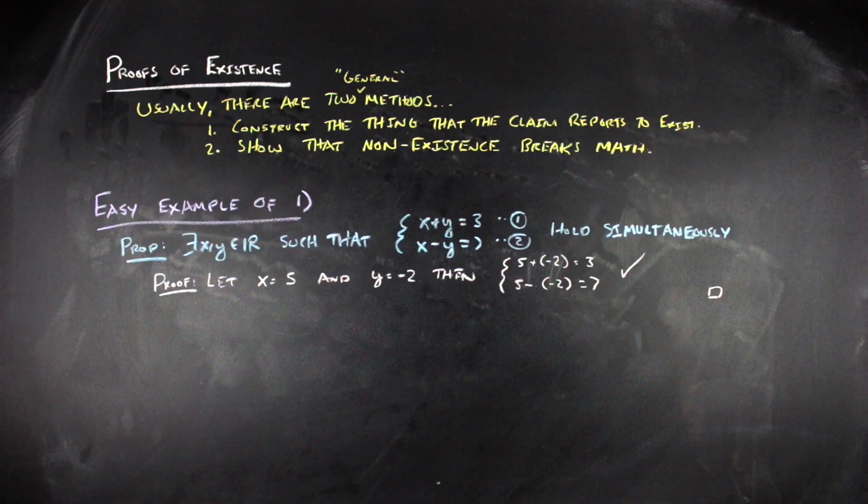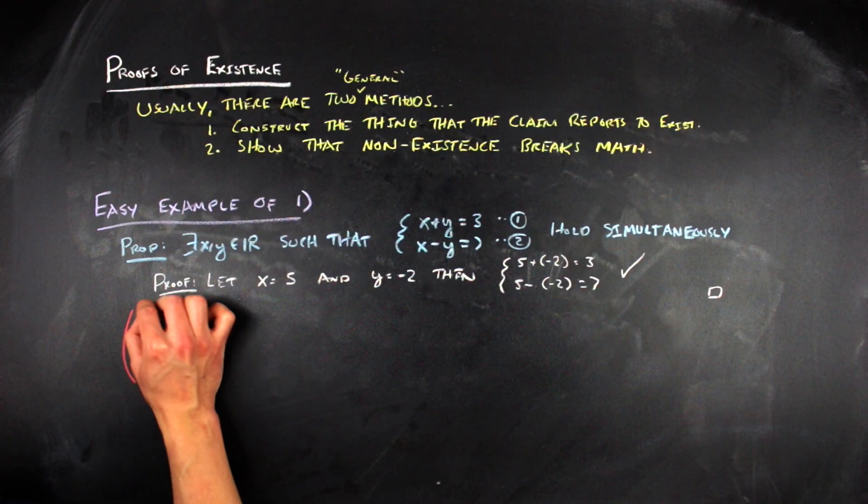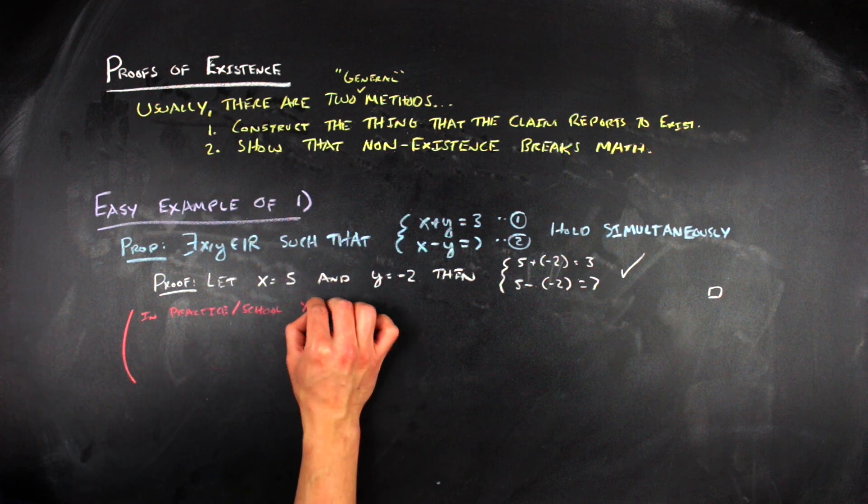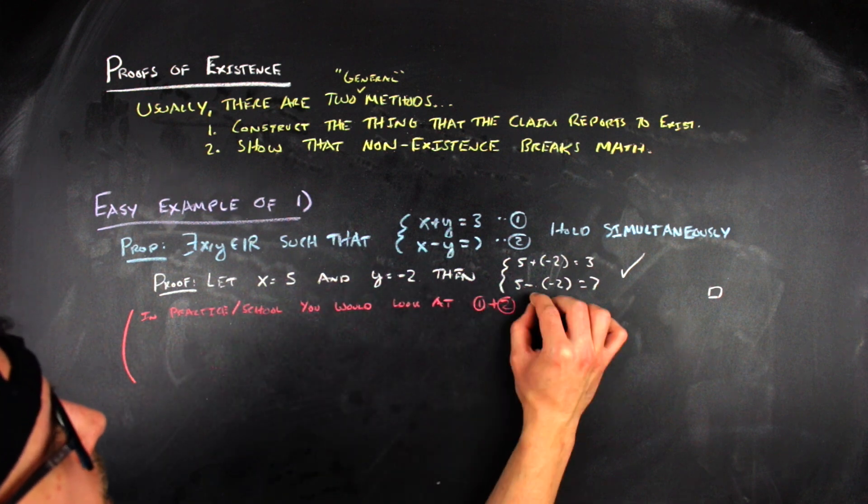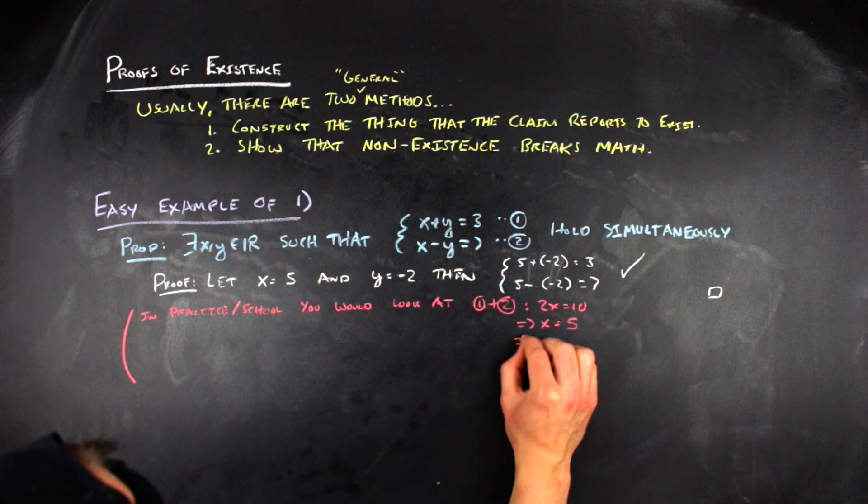This happens a lot in real analysis. And it's like a very big sticking point of real analysis where, especially when you're doing epsilon and delta arguments, a lot of times the proofs just start with take delta equal to this thing. And you show that that thing works, but in the background, you're doing some background work. Like in this problem, in the background, it's kind of an algebra exercise, but you did some algebra to get x is equal to five and y is equal to negative two.